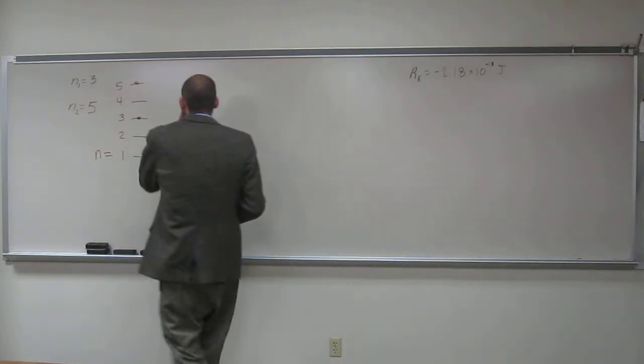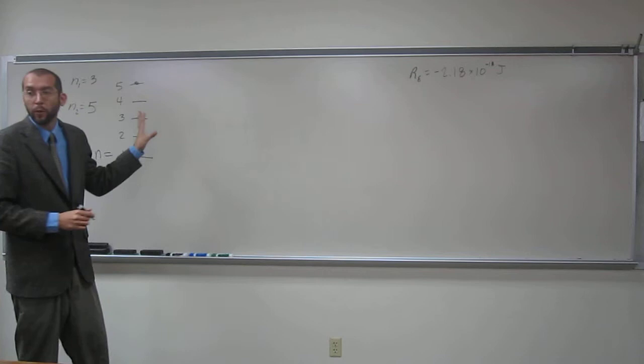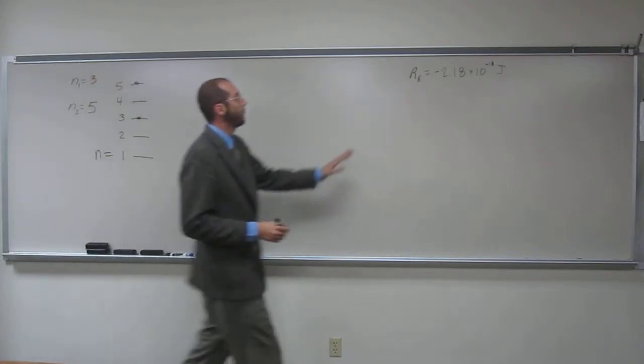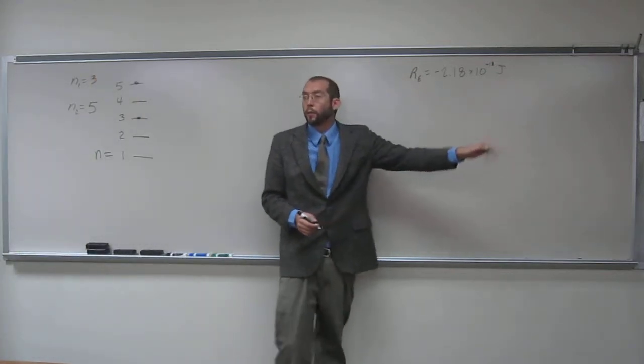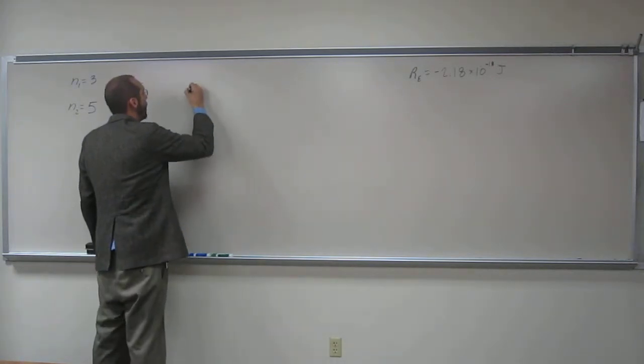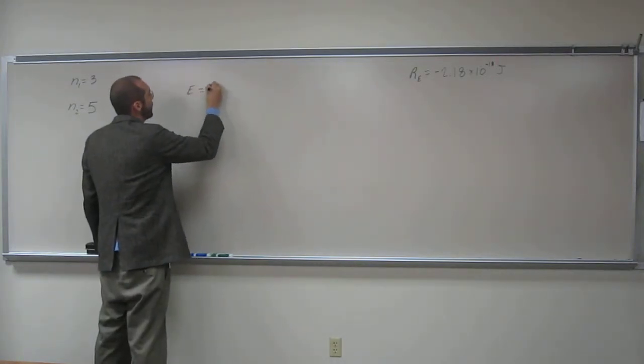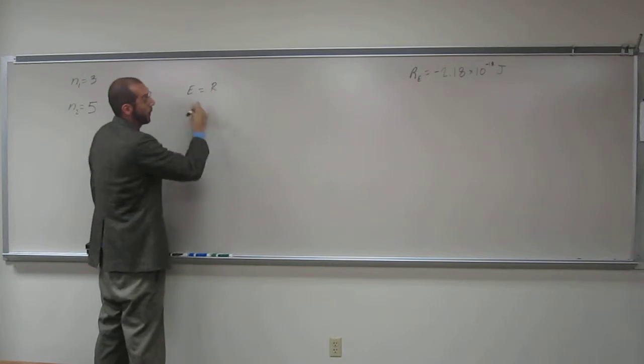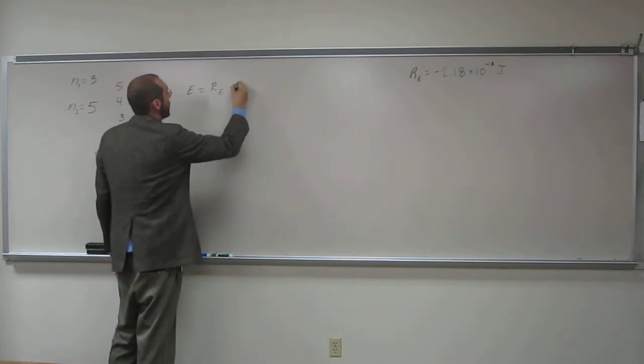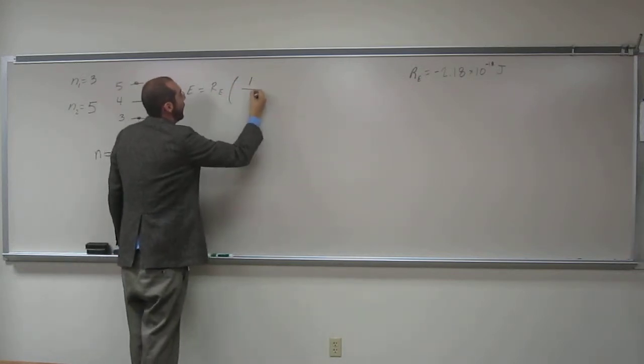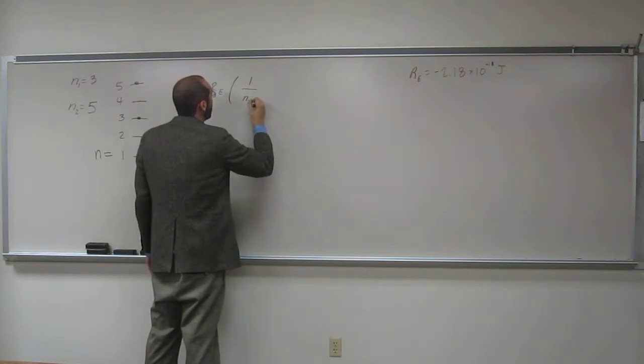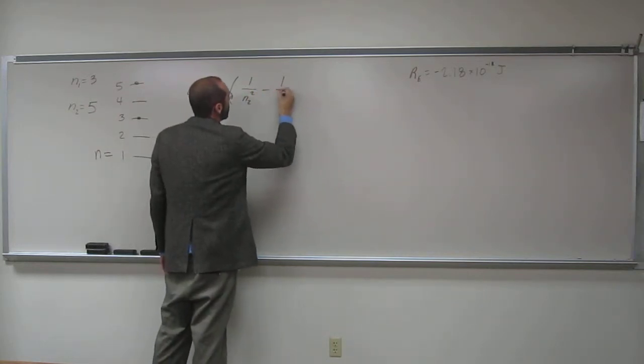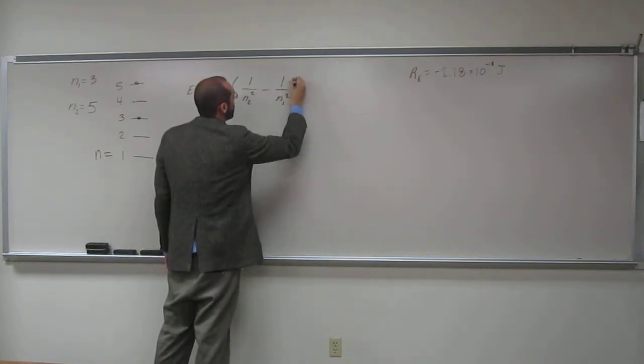So anyways, we again need to remember the Rydberg equation, and I have the Rydberg energy constant up here for you guys. So the Rydberg equation is E, the Rydberg energy equation, E equals RE, 1 over N2 squared minus 1 over N1 squared.